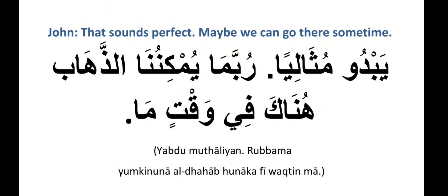'Rubbama' means maybe. 'Yumkinuna al-dhihab hunaka' — we can go there. Note that 'nahnu' (we) is not mentioned explicitly; instead the verb is conjugated to reflect 'we.' 'Fi waqt ma' is an expression meaning 'sometime.' Full sentence: 'Yabdu mithaliyan. Rubbama yumkinuna al-dhihab hunaka fi waqt ma.'